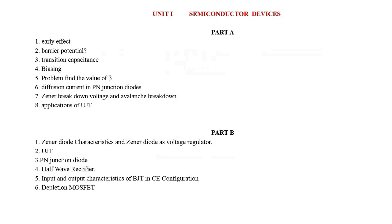Then applications. Sometimes the question is about Zener diode as a voltage regulator — include the voltage regulator diagram. Next, UJT: draw the diagram, then the characteristics diagram, the equivalent circuit diagram, then explanation, and application. That is more than enough.